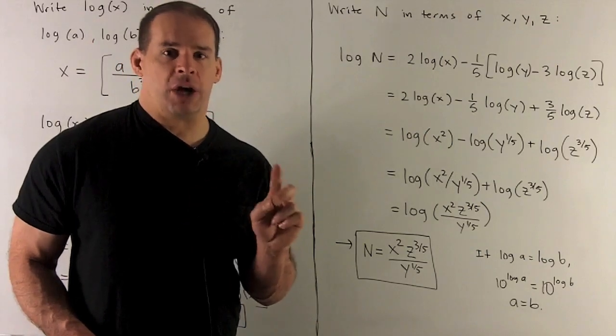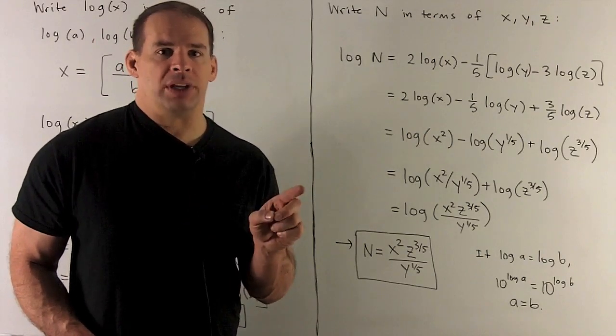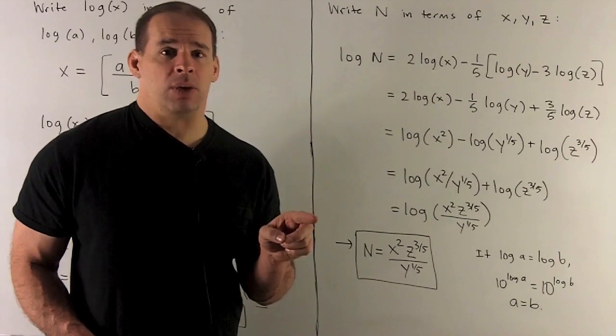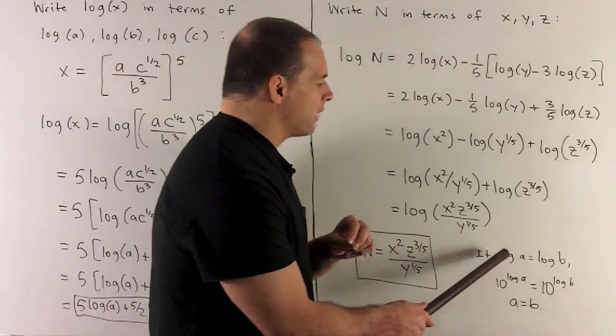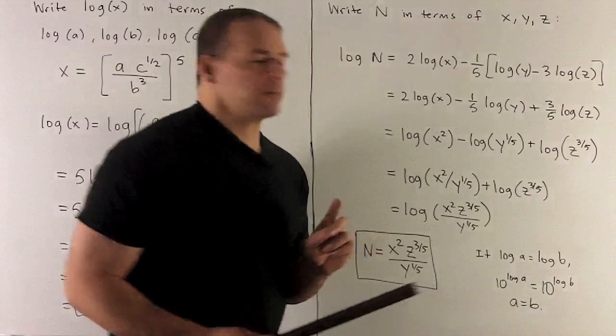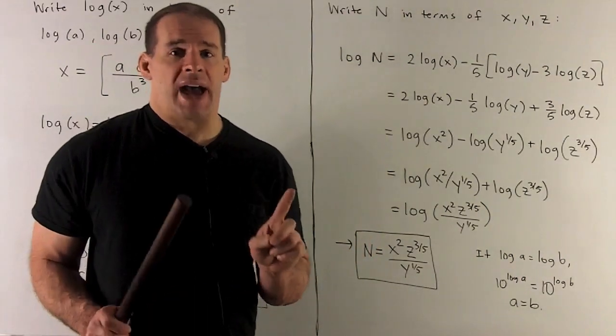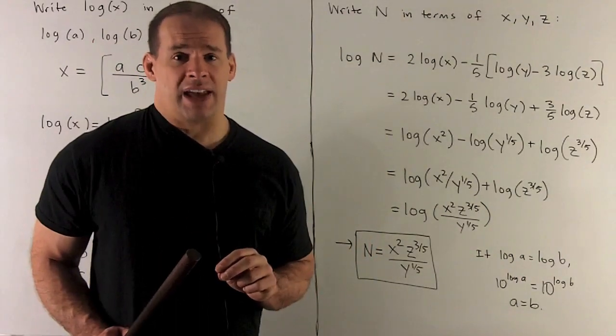Now, just to get back to my trick here, if I have two logs equal to each other, why do the insides have to be equal? Well, if I suppose I have log of A equal to log of B, I could take both sides, put them up above 10 as exponents.